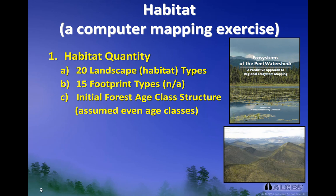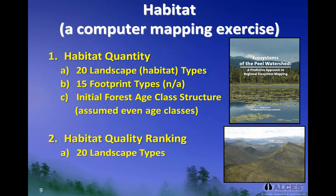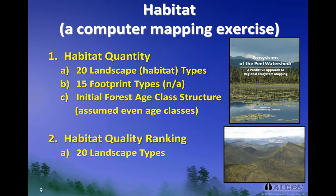Once we collected the baseline information on the landscape through the GIS program, we ranked the quality of the landscape or habitat types according to the wildlife species we were interested in modelling. For most studies, we would also rank the quality of the footprint types as habitat to wildlife. But, as mentioned previously, we assumed that there was no human footprint in our study area.